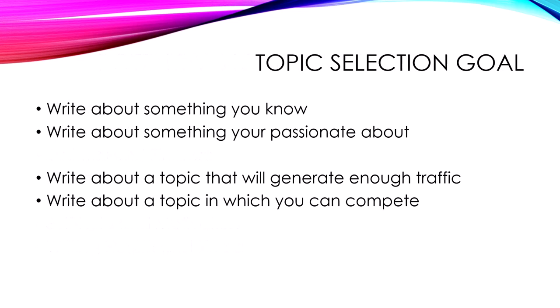So what is the topic selection goal? Here's what I would recommend: write about something you know, write about something you're passionate about. And then I would put these qualifications on it — write about a topic that will generate enough traffic, and write about a topic in which you can compete. How do you validate or gather information on these last two topics? You know what you know and you know what you're passionate about, but you don't know what's going to generate traffic and you don't know where you can compete.